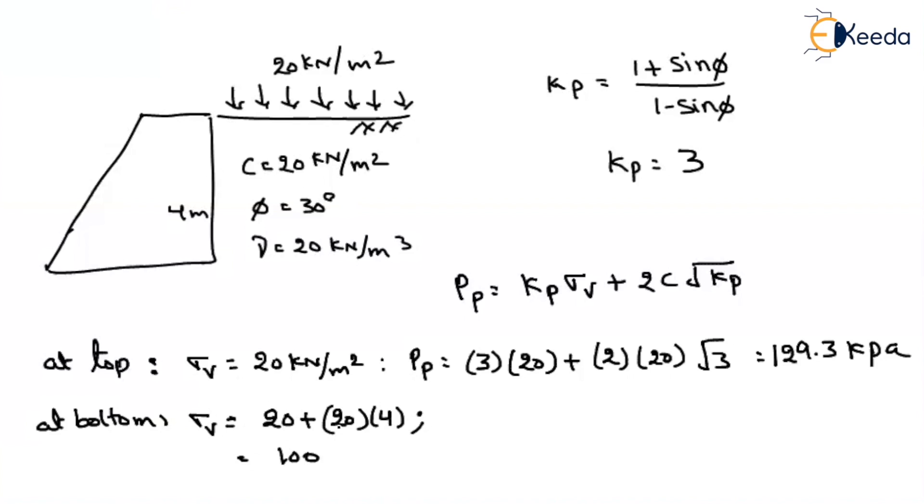So what is the passive earth pressure? That will be equal to Kp 3, vertical stress 100, plus again 2 C and under the root 3. So if you solve this, you will get it around 369.3 kilopascal.